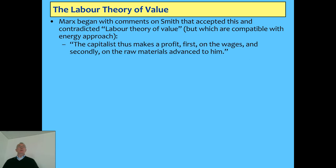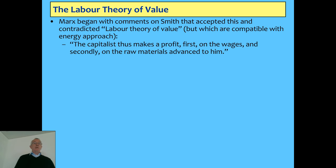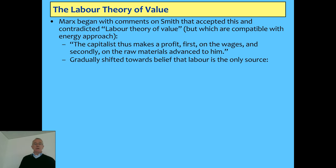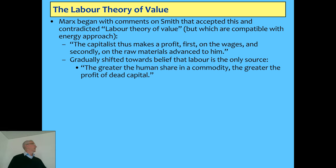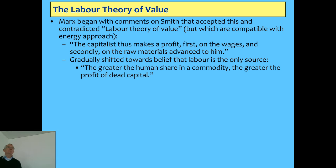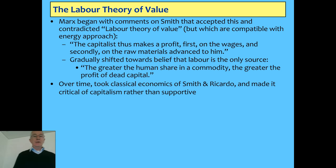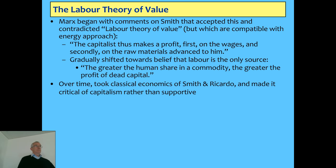He gradually starts shifting towards the belief that labor is the only source of value, saying things like 'the greater the human share in a commodity, the greater the profit of dead capital.' Over time, he went from initial lack of acceptance of a labor theory of value to being quite emphatic about it. One of the many things that made Marx very different to Smith and Ricardo is that if you believe labor is the only source of value, you can argue why did the capitalists get anything? There were lots of Ricardian socialists who preceded Marx and argued that because labor is the source of value, workers should receive all the output, and capitalists are exploiting workers by paying them less than their value.